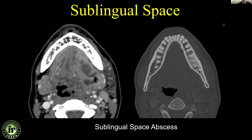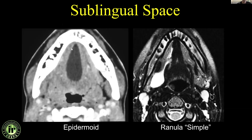When you see a sublingual space abscess, always look at your bone algorithms, because the majority of sublingual space abscesses are odontogenic in origin. In this case, the origin was this rotten tooth. If you look closely, you can also see sclerosis of the mandible, indicating chronic and acute osteomyelitis — resulting not only in this fluid collection, but also a small amount of air within it.